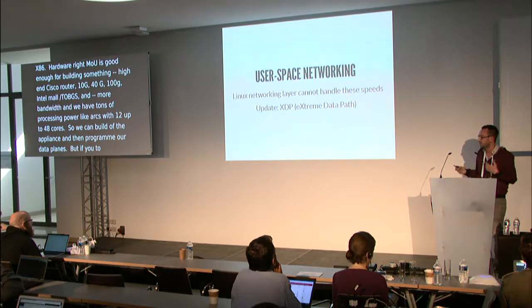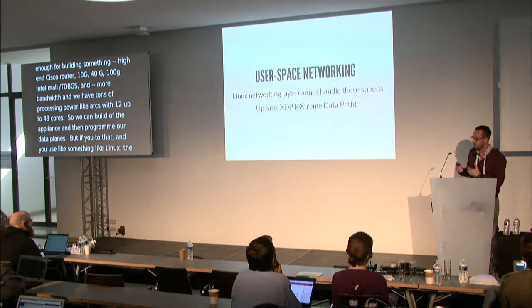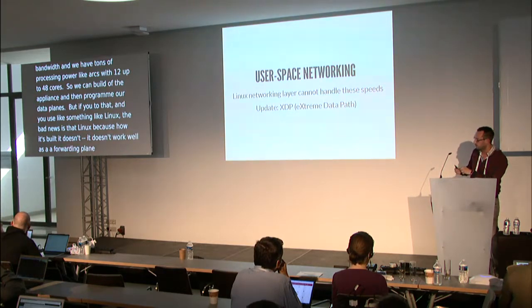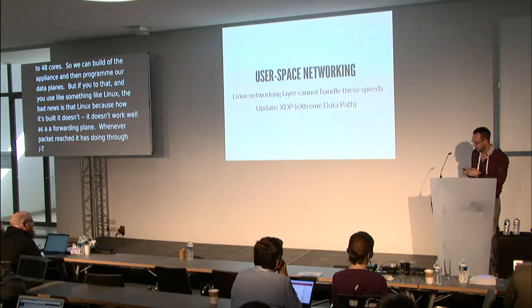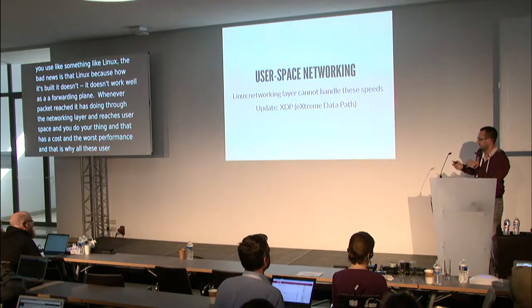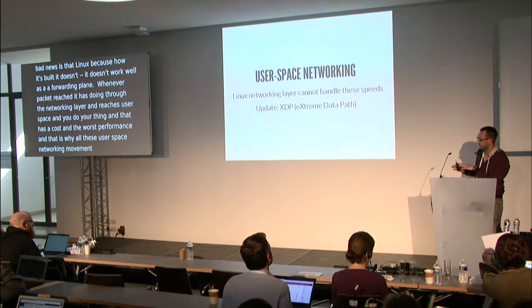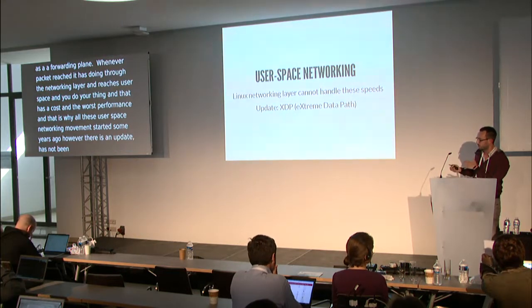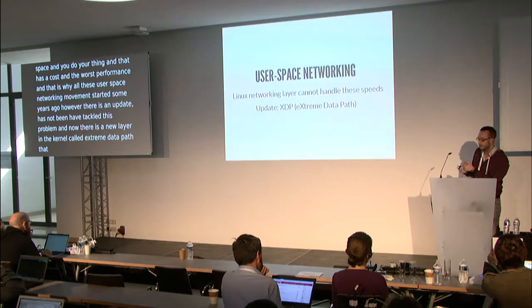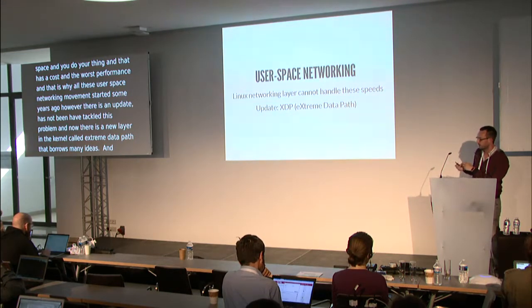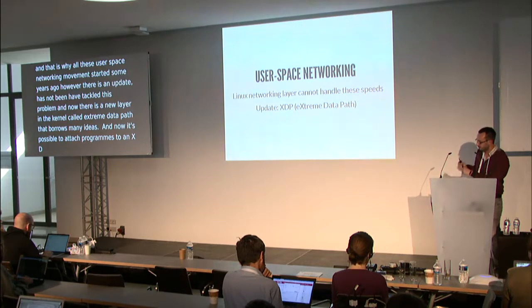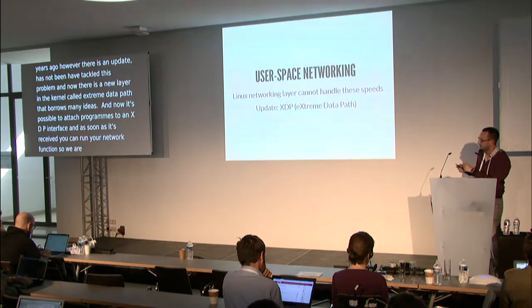If you use something like Linux, the bad news is that Linux doesn't work well as a forwarding plane. Whenever a packet reaches the NIC, there is an interrupt and it has to go through the networking stack until it reaches user space — that has a cost and degrades performance. That is why the user space networking movement started. However, kernel developers have tackled this problem and there is now a new layer in the kernel called XDP — eXpress Data Path — that borrows many ideas from user space networking. It's now possible to attach programs to an XDP interface and as soon as a packet is received at the NIC, run your network function directly.